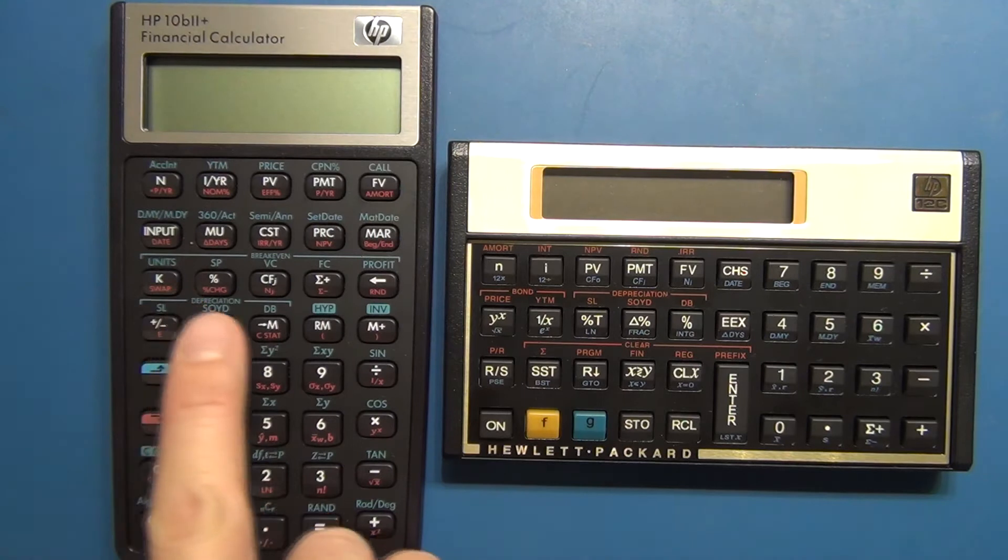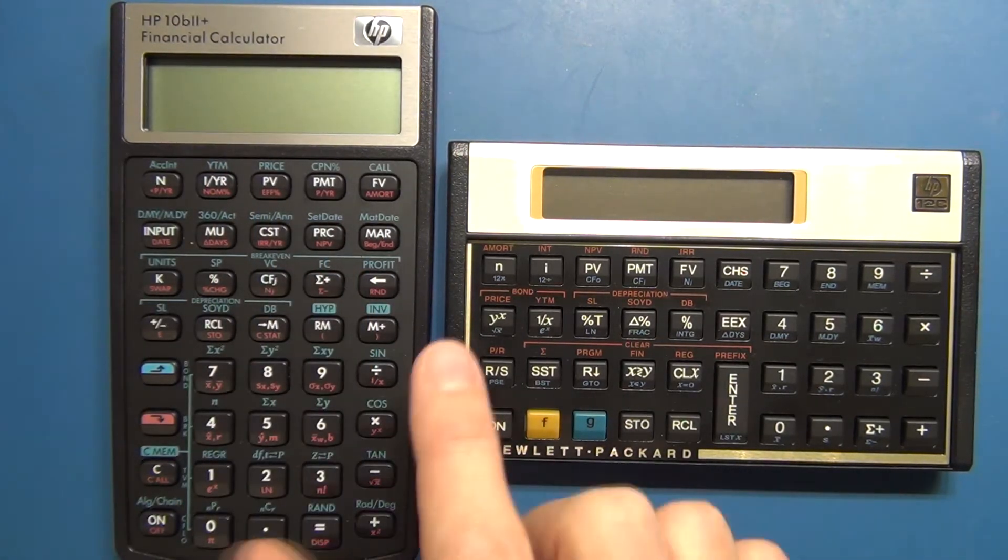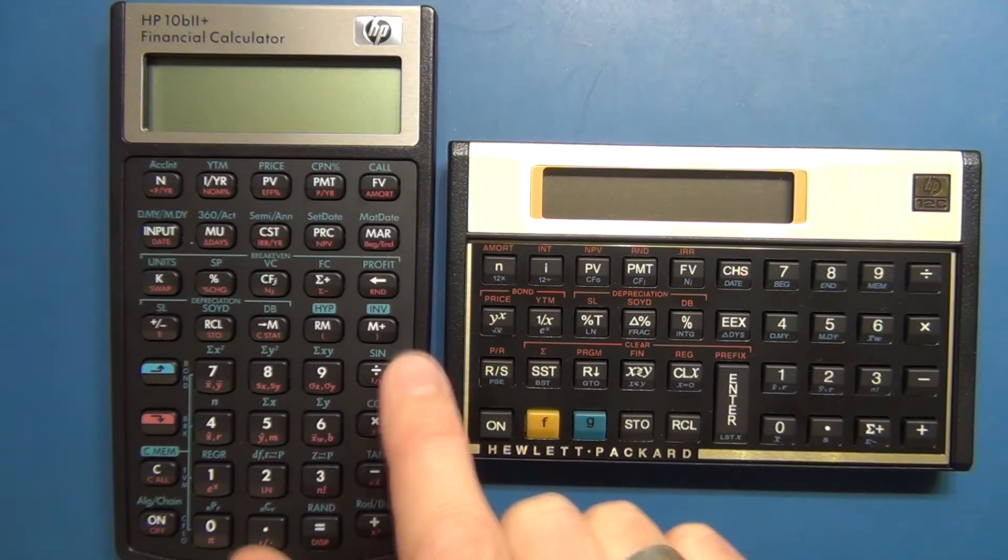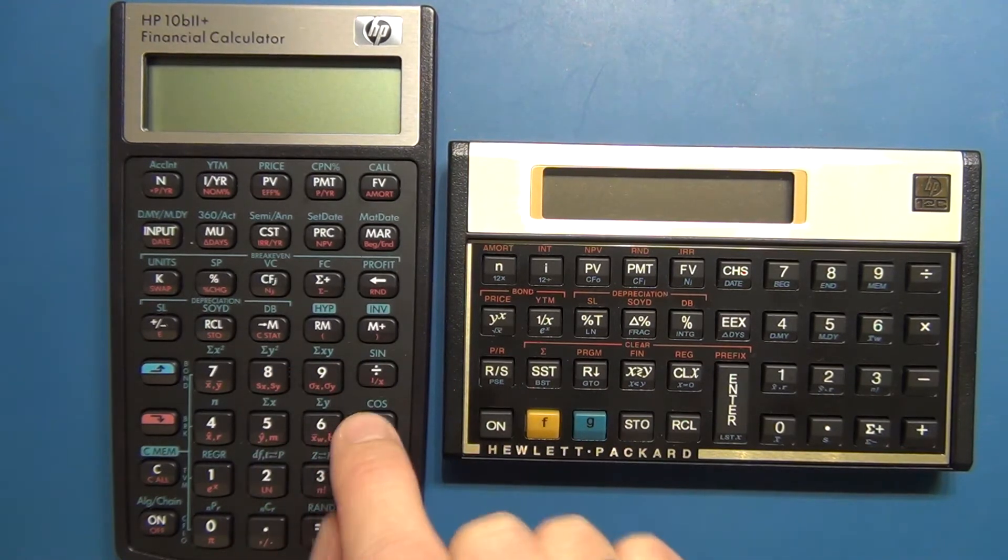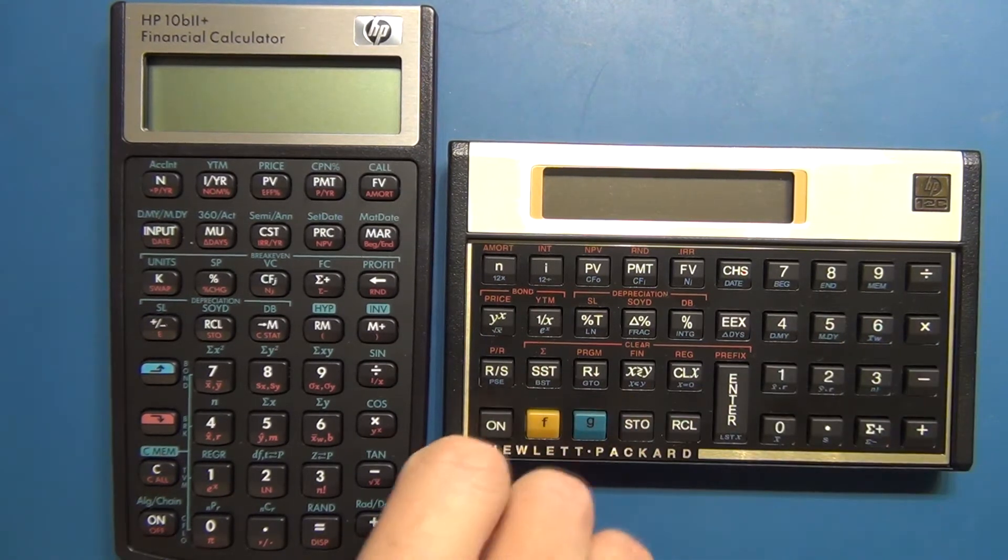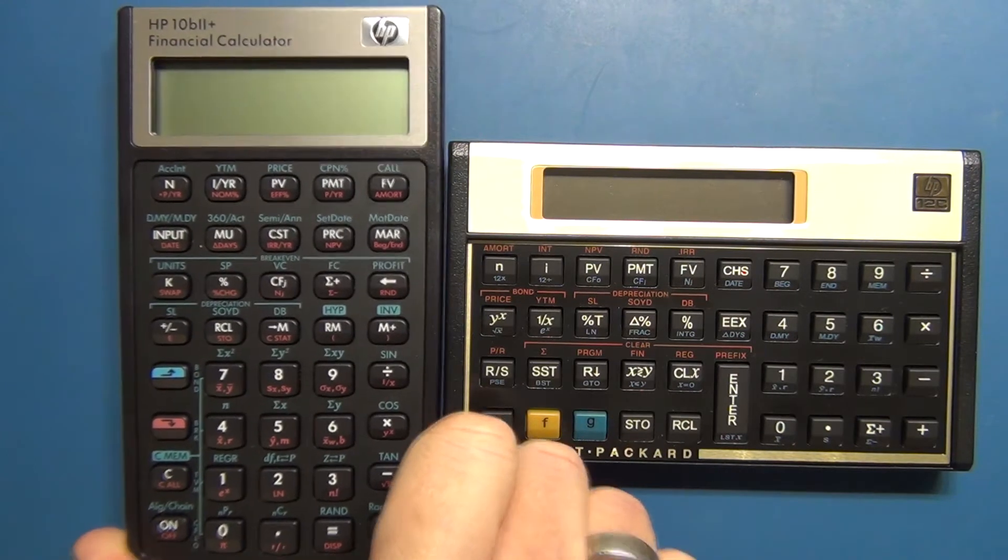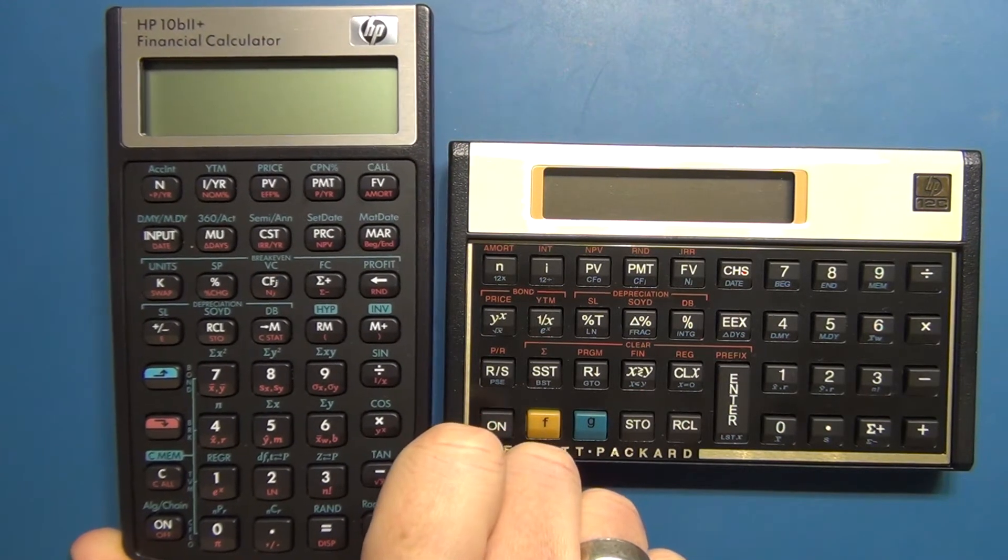There's obviously a fair bit more functionality on the 10B2+. But the biggest thing is that when you're doing normal arithmetic, you enter it in algebraic form as opposed to RPN. And of course, most people these days are working in algebraic. So that's why this is becoming kind of the new standard of financial calculators.